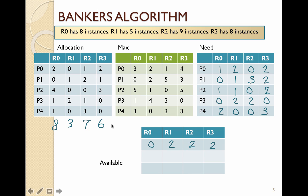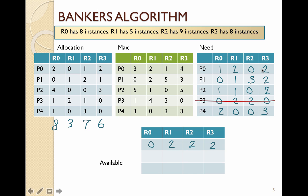Once we have the need and available, we can run the algorithm. All available resources must be greater than or equal to the need of a process. We compare the available vector (0, 2, 2, 2) against each process's need in any order. Starting with P0, the available does not cover P0's need. It also doesn't cover P1 or P2, but it does cover P3, because (0, 2, 2, 2) is greater than or equal to P3's need of (0, 2, 2, 0).